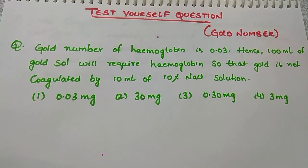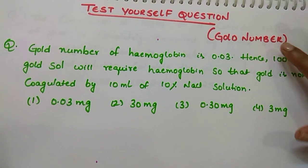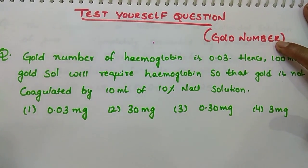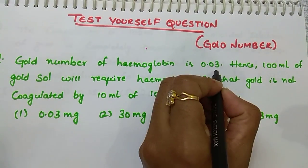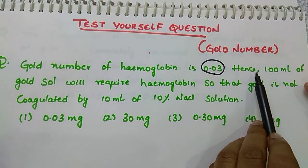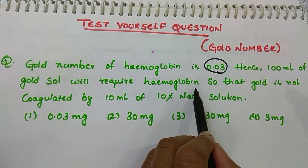Students, in this session I am going to discuss solutions to the test yourself questions based upon the gold number concept. Gold number of hemoglobin is given as 0.03. Hence, 100 ml of gold solution will require hemoglobin so that gold is not coagulated.